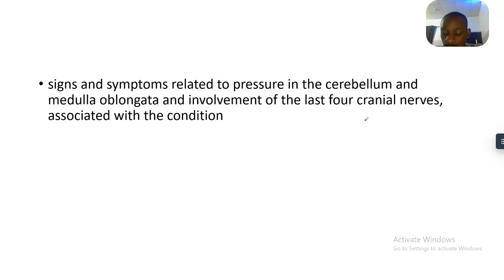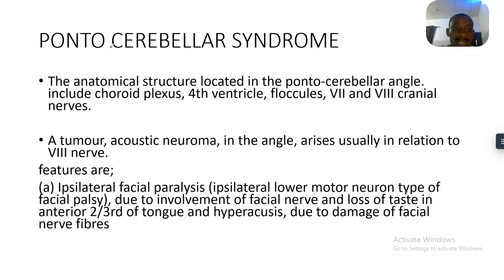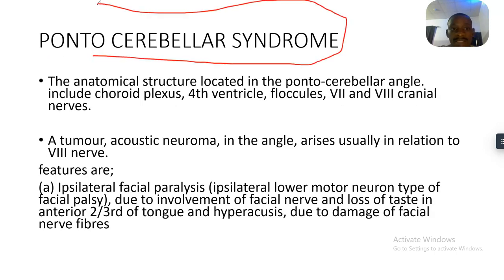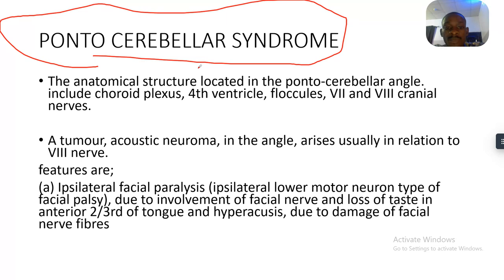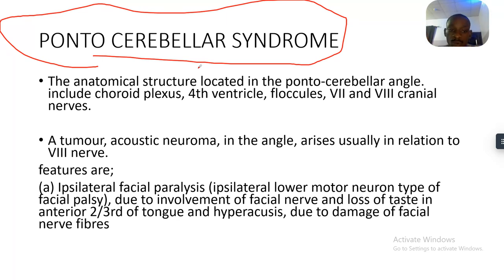Moving to the third concept — pontocerebellar syndrome. The anatomical structures located in the pontocerebellar angle include the choroid plexus, which forms the cerebrospinal fluid, the fourth ventricle, the flocculus, and the fifth and eighth cranial nerves. A tumor or acoustic neuroma in the angle arises usually in relation to cranial nerve 8.